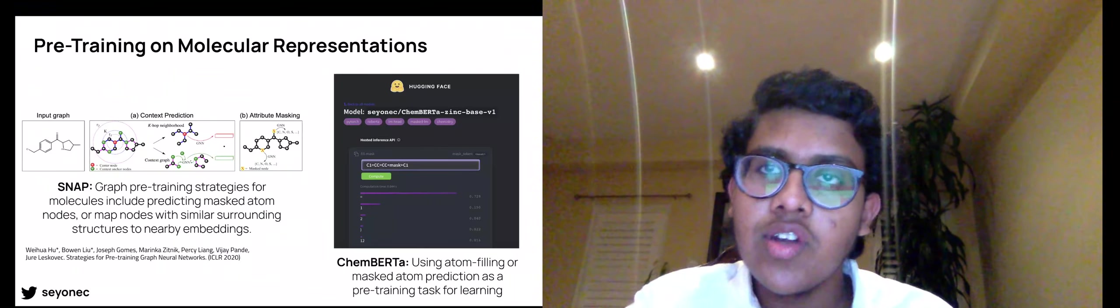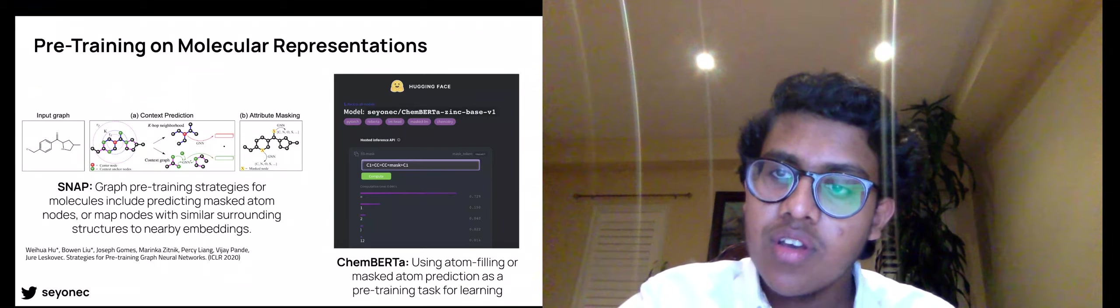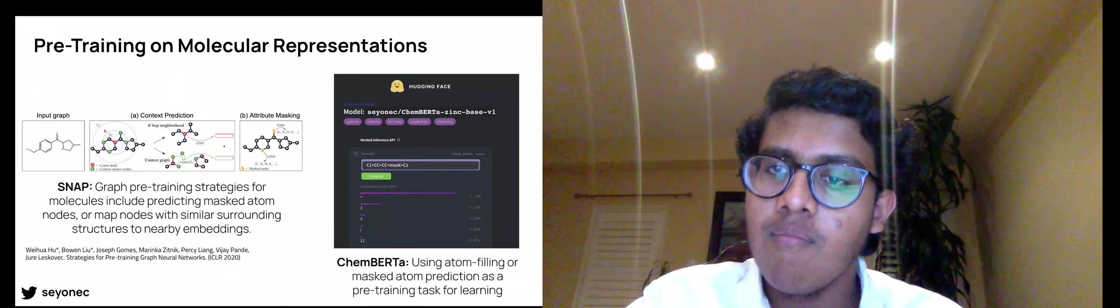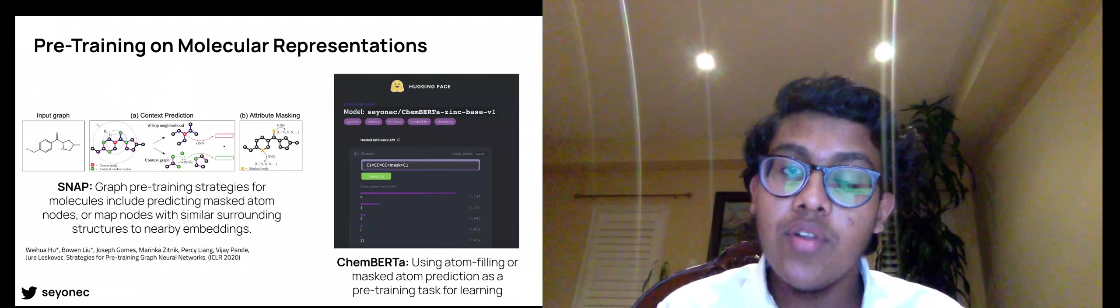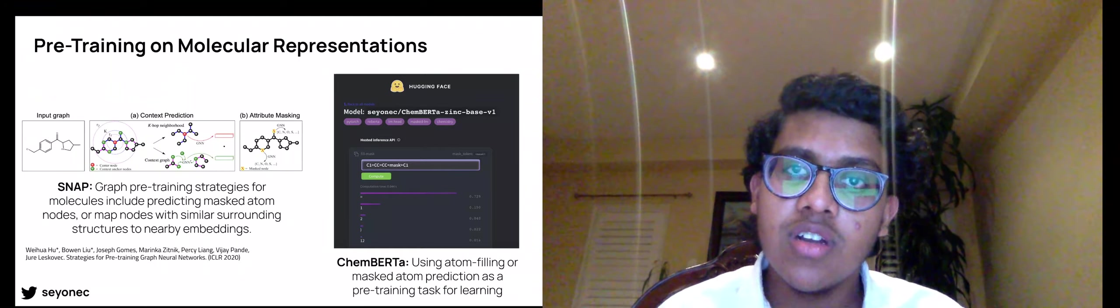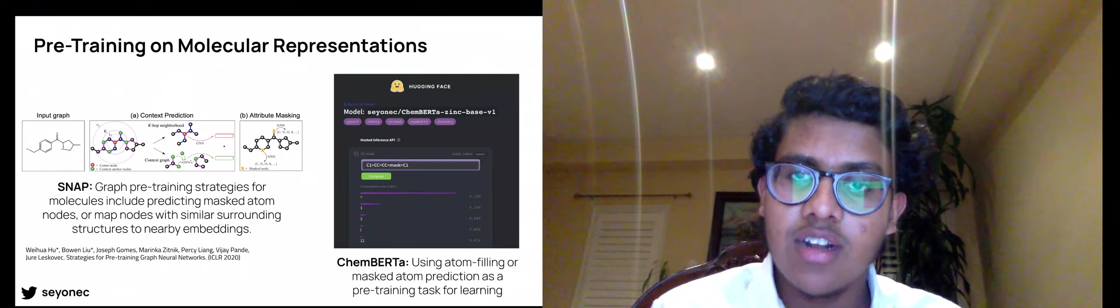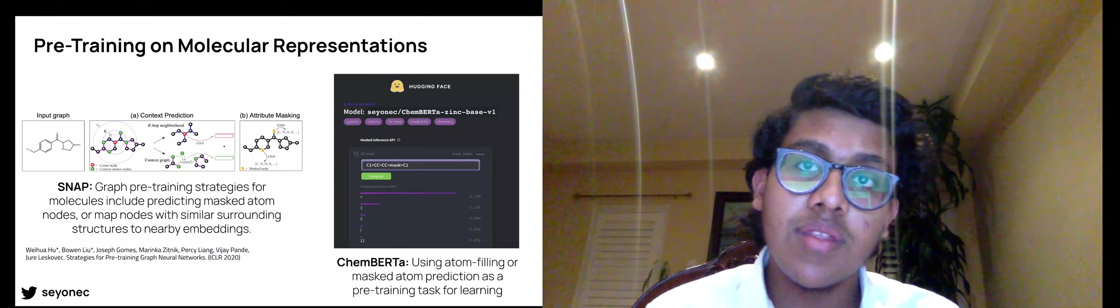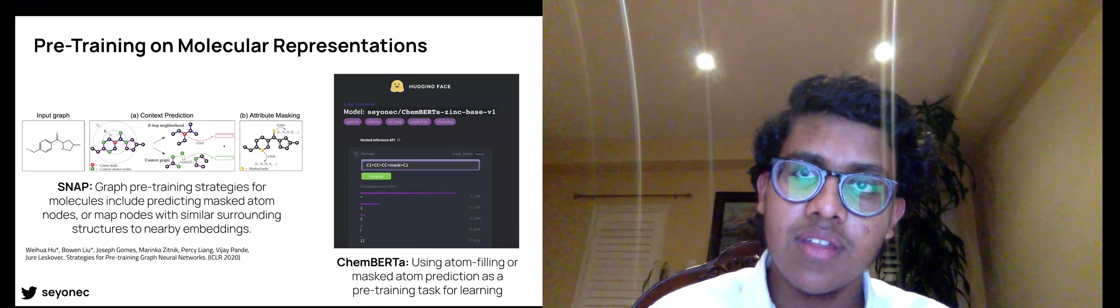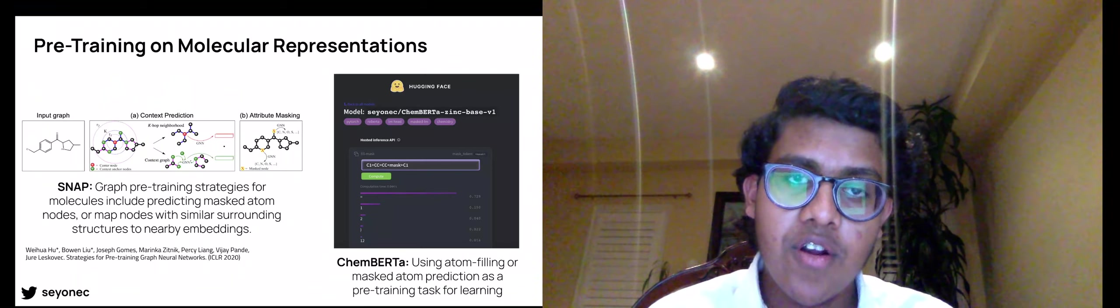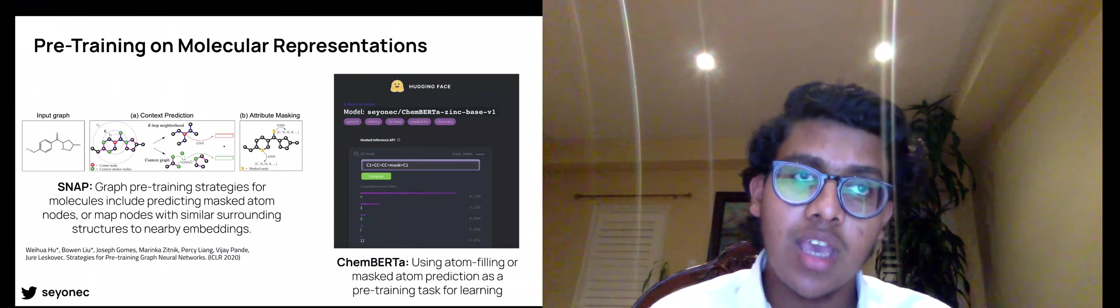Currently in the field of pre-training on molecules, the most emergent and popular method remains graph pre-training strategies. Graph pre-training strategies for molecules include predicting masked atom nodes in a molecular graph or aiming to map nodes with a similar surrounding structure to nearby embeddings. Unfortunately, building robust pre-training strategies with molecular graphs is a problem that still remains unsolved. We aim to see if natural language processing-based pre-training tasks using a pre-training procedure from RoBERTa, which masks 15% of each token on an input string, works as a means to fundamentally learn chemical space.